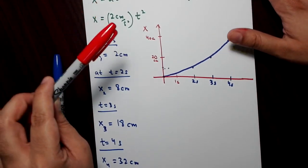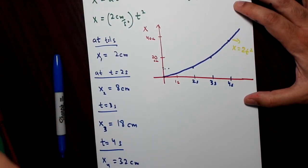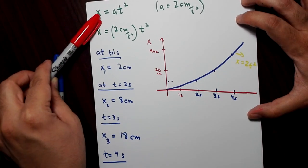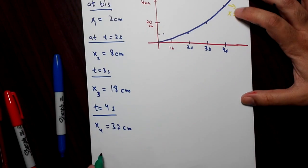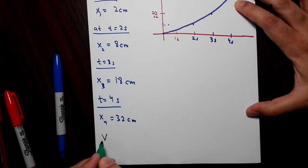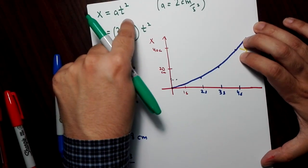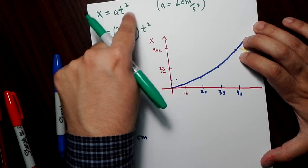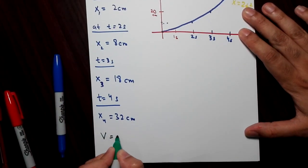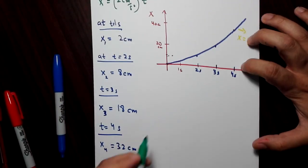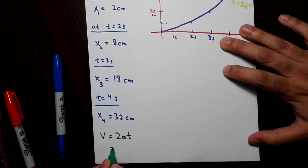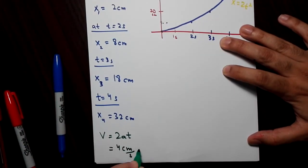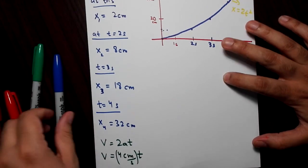If you want to plot the velocity versus time graph, you have to take the derivative. In order to get the instantaneous velocity, you take the derivative of this function. The derivative of x equals two a t squared is v equals 2at. The derivative of t squared is 2t, so you get 2at.